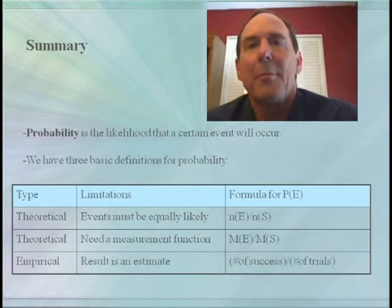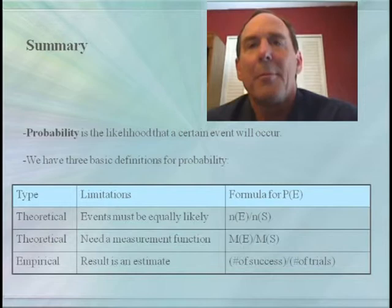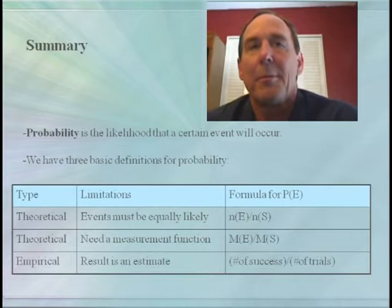So in summary, probability is the likelihood of some random event occurring. We have given three basic definitions for the probability of an event. For equally likely sample spaces, we use the cardinality of E divided by the cardinality of S. For a measurable set S, we can say that it's the measure of E divided by the measure of S. And for empirical data, we have the number of times E occurs divided by the number of trials. So good luck, and thanks for watching.